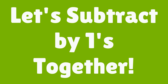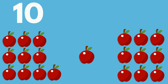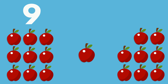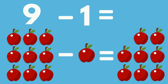Let's subtract by ones together. 10 apples minus 1 apple equals 9 apples. 9 apples minus 1 apple equals 8 apples.